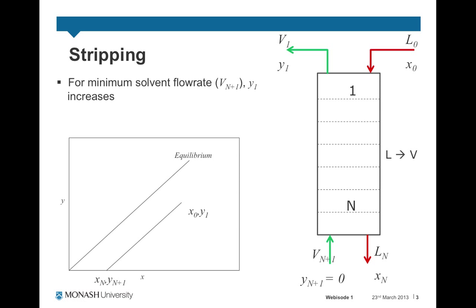Looking in particular at stripping, we're transferring our solute from the feed, which is the liquid coming here, into the vapour. So a vapour solvent enters the column at the bottom with effectively zero solute concentration. The solute is transferred from the liquid and travels out at the top.